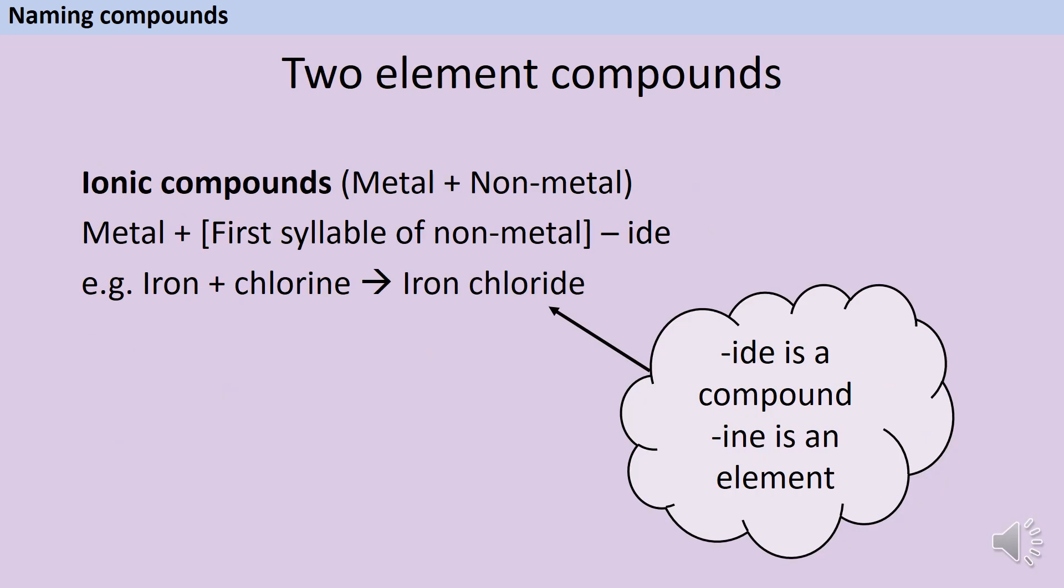In this video we're only going to look at a class of compounds called ionic compounds, which are made when a metal and a non-metal bond together. If you're not sure which of the elements is the metal and which is the non-metal, look at your periodic table. Metals are found on the left of the table, and non-metals are found on the right.